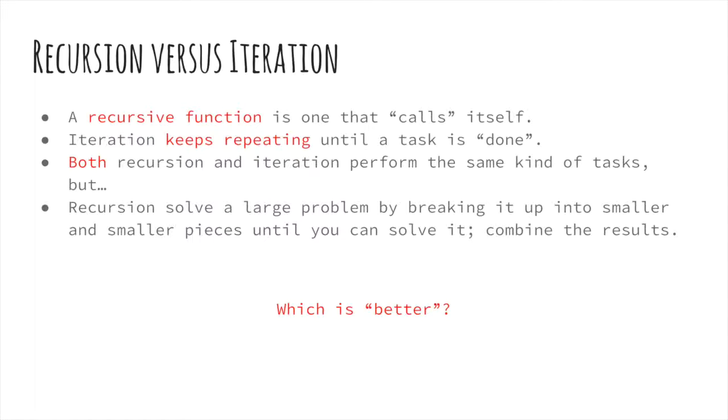As we discussed, in recursion a function calls itself and solves a larger problem by breaking it down into smaller problems until the problem is so small it can be solved easily, then combines the solutions of these smaller problems to get the final solution. In iteration, the loop runs till the condition has been met. Both recursion and iteration can perform the same task, as we saw when we implemented functions to get the nth element of the Fibonacci sequence.